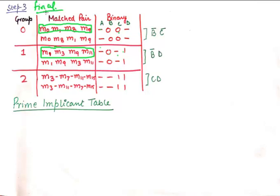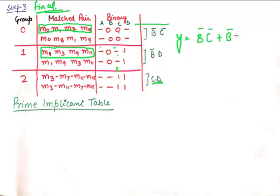Once matching stops, write down reduced Boolean expressions from the binary representation: a dash means we omit that variable, a 0 means we write a bar over that variable, and a 1 means we write the variable as is. For example, we do not write A or C, and we write B̄ and D because D is 1 in both cases and B is 0 in both cases — giving B̄D. In the third case, C and D are both 1, so we write CD. The reduced expression at this stage is B̄C̄ + B̄D + CD.